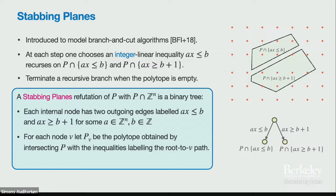For example, starting at P, going down a branch and intersecting with ax ≥ B+1 gives the polytope at that node. A stabbing planes refutation of P is one where each leaf is labeled with the empty polytope. This is a sound proof system: since every removed slab contains no integer points, if we derive the empty polytope at each leaf, this proves there were no integer points to begin with.